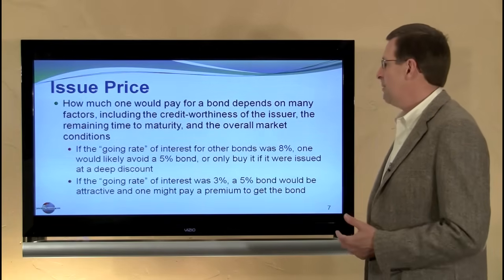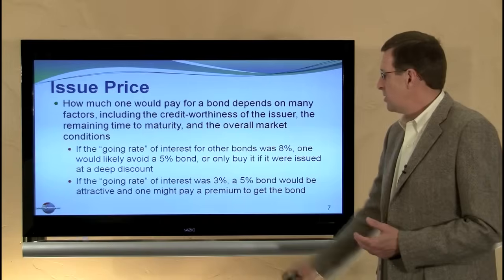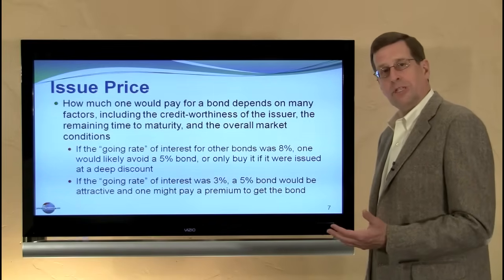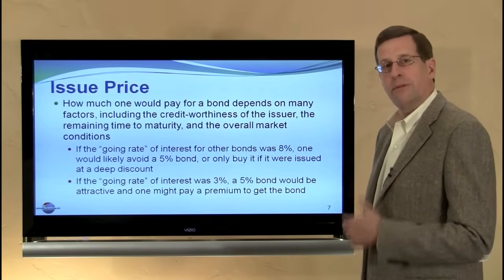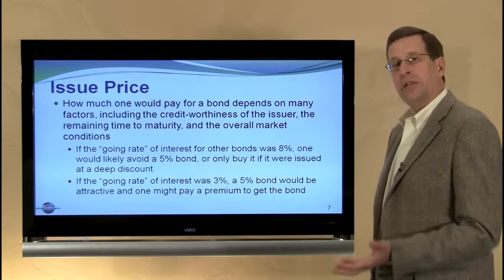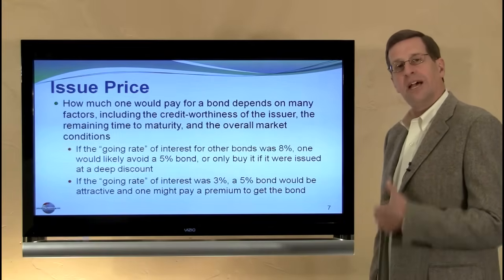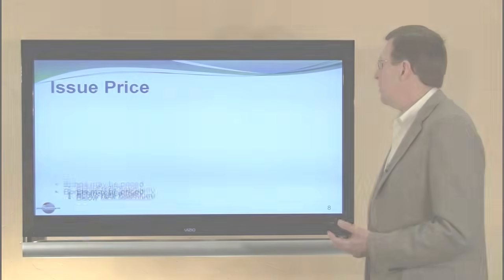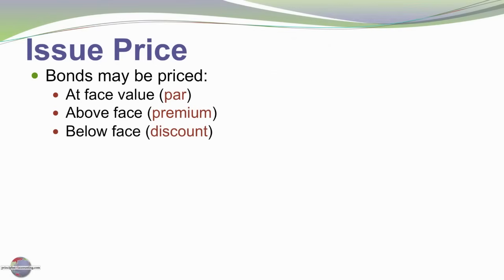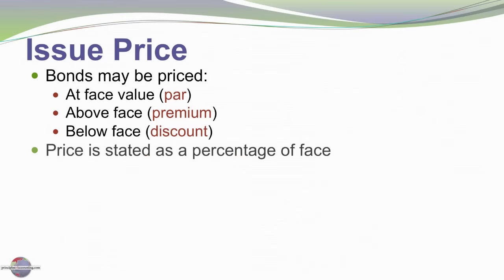Who would want the 5% bond? The answer is really no one, unless they could buy it at a discount. Conversely, if the market rate was 3%, everyone would clamor to buy 5% bonds — they would actually bid the price up such that the investment would be at a premium. If the market rate and stated rate are similar, we'd expect the bond to price at par. If the contract rate is above the market rate, we'd expect a premium, and conversely for a discount.